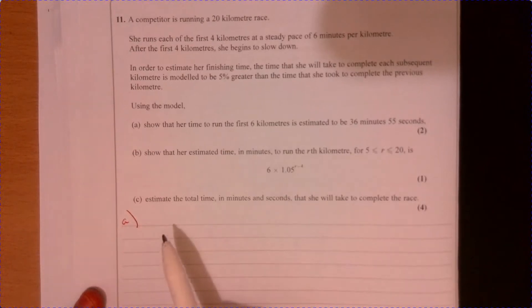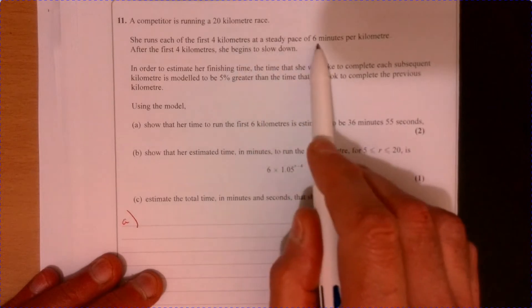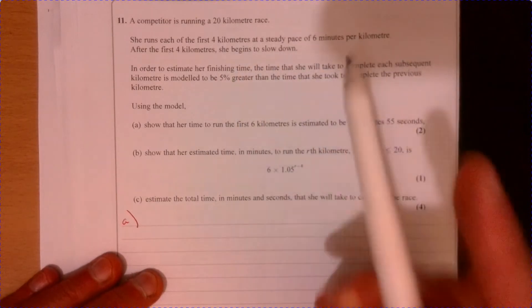Question 11. Let's just summarize where we are. The first four kilometres, six minutes per kilometre.